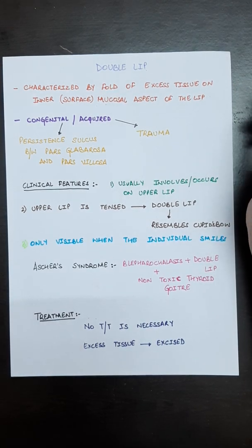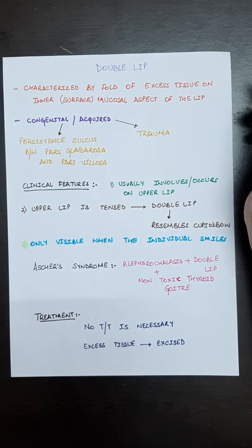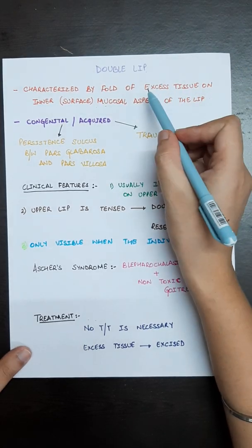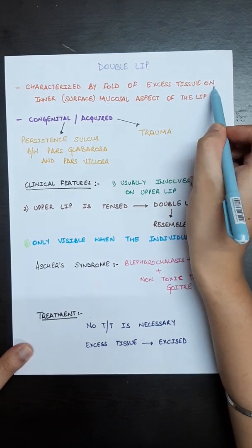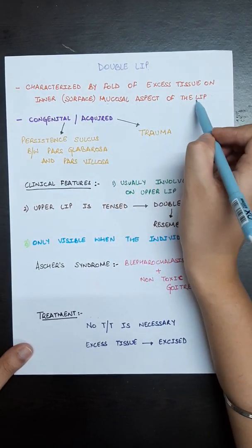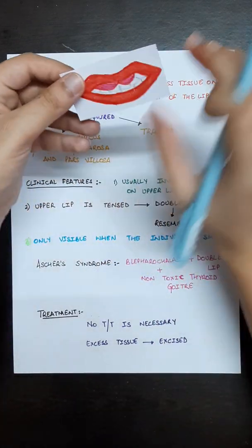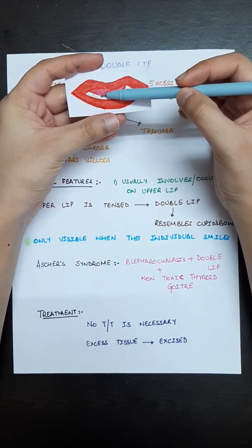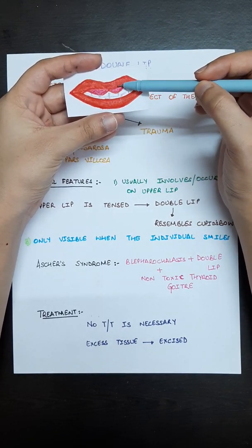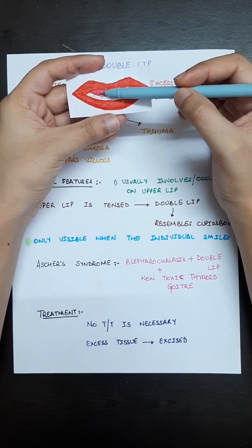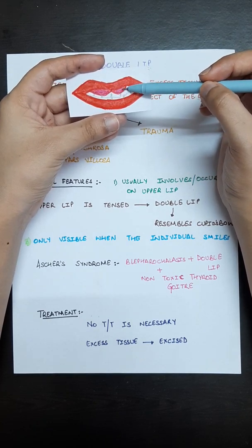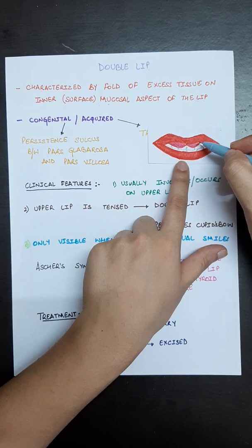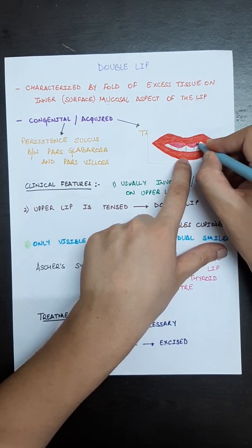Today we are going to discuss about double lip. It is a developmental anomaly where there is a fold of excess tissue on the inner mucosal surface of the lip. Here you can see swellings from the inner aspect of the lip — this excess tissue is what constitutes a double lip.